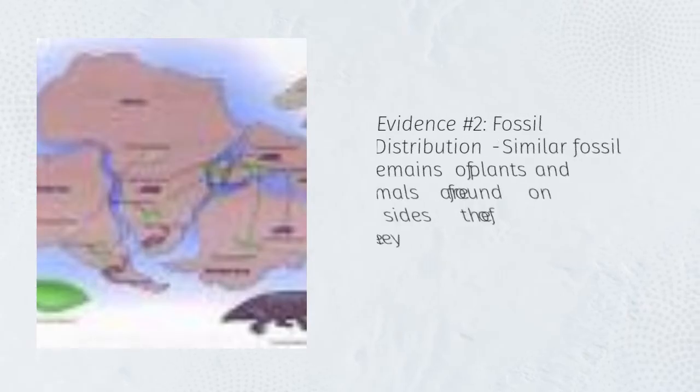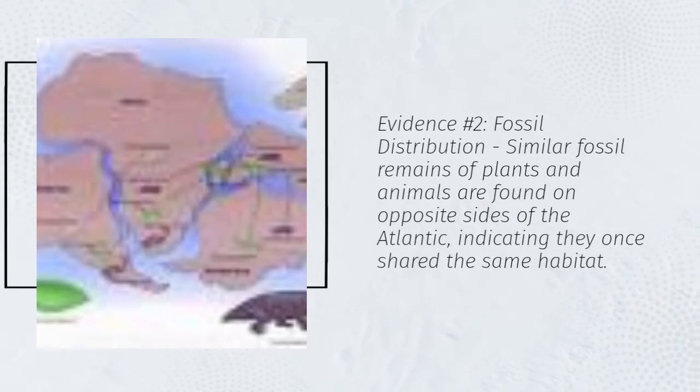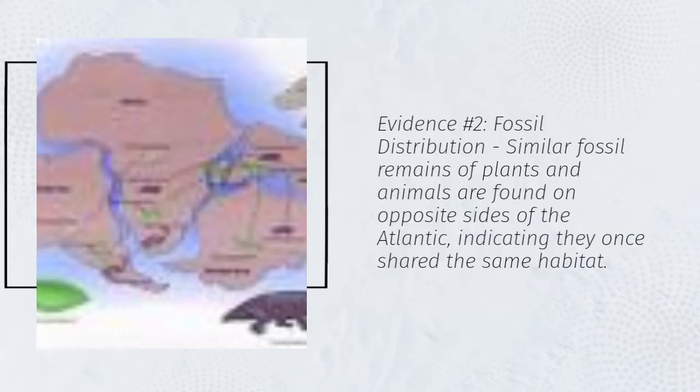Evidence number two: Fossil distribution. Similar fossil remains of plants and animals are found on opposite sides of the Atlantic, indicating they once shared the same habitat.